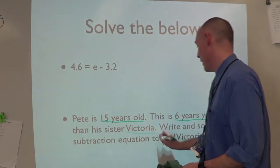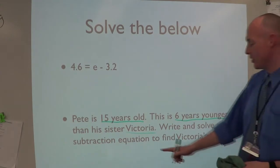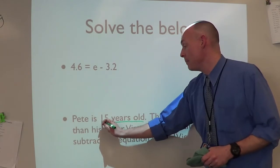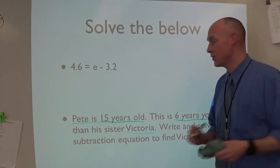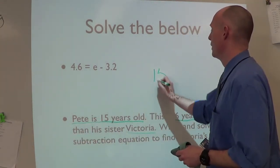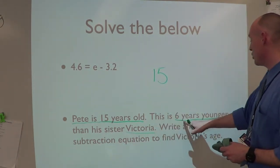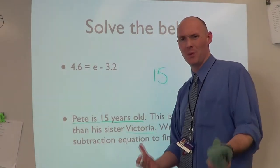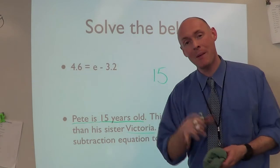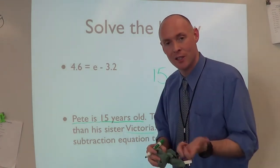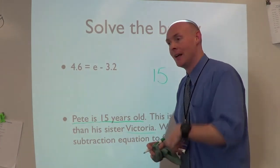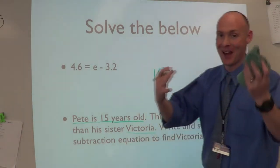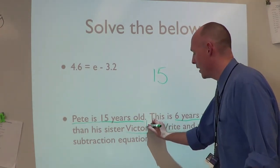Write and solve a subtraction equation to find Victoria's age. We know that Pete is 15 years old. Pete is six years younger than his sister Victoria. We know it's six years younger. The other problem is, do we know Victoria's age? We don't, so that's going to be our variable. I'll get really creative with this variable - it's Victoria, so I'll use v as my variable.